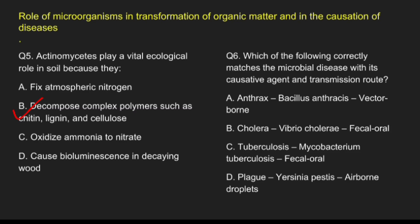Question 6: Which of the following correctly matches the microbial disease with its causative agent and transmission route? Option A, anthrax, Bacillus anthracis, vector-borne; Option B, cholera, Vibrio cholerae, fecal-oral route; Option C, tuberculosis, Mycobacterium tuberculosis, fecal-oral; Option D, plague, Yersinia pestis, airborne droplet. The correct answer is option B: cholera caused by Vibrio cholerae through the fecal-oral route.